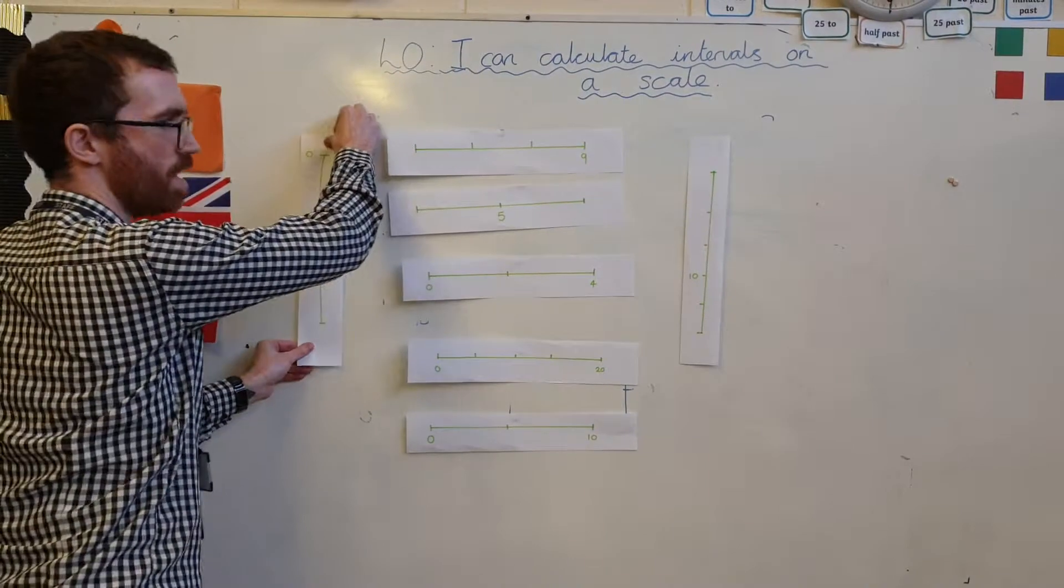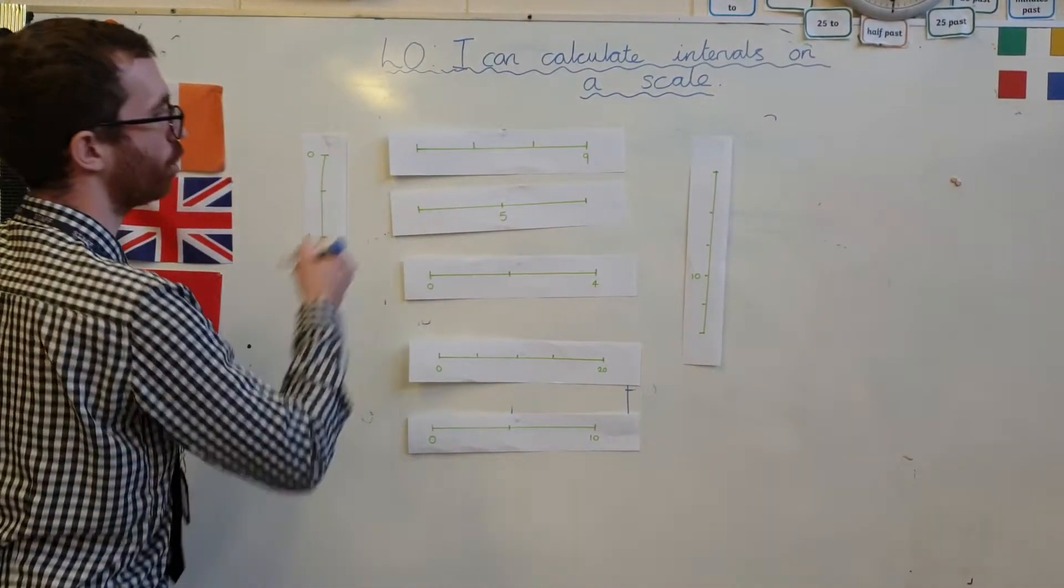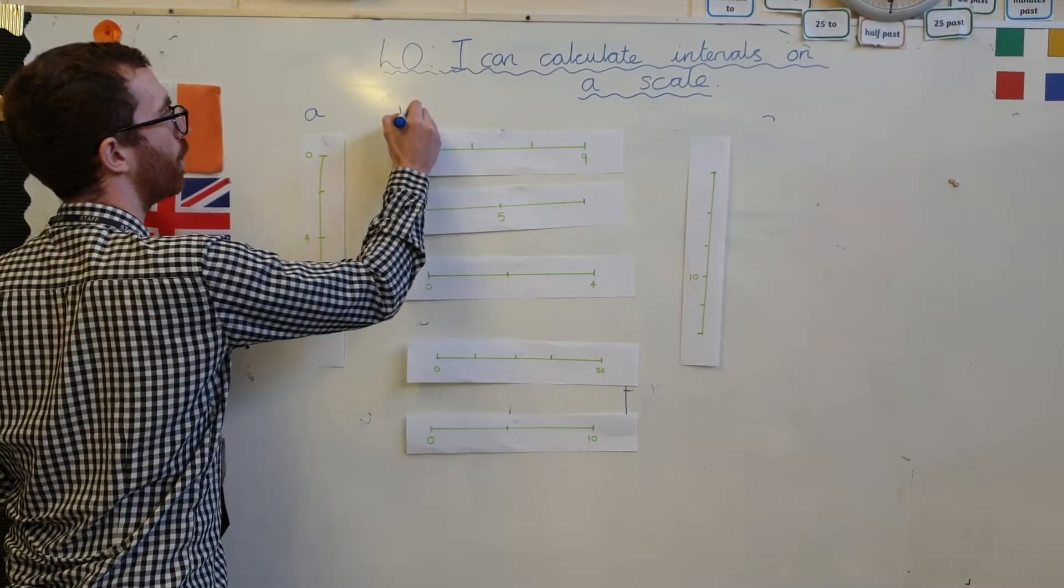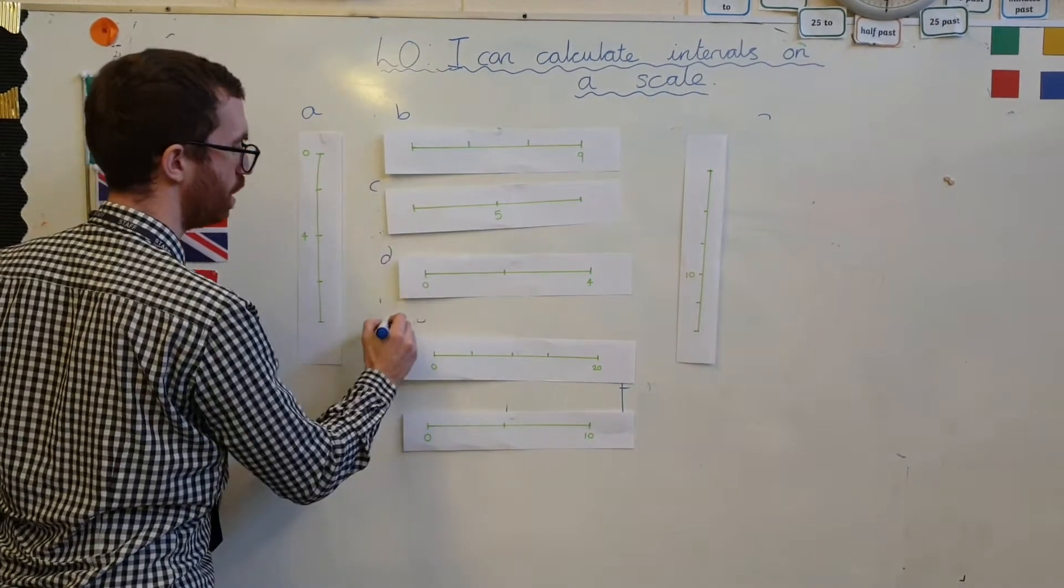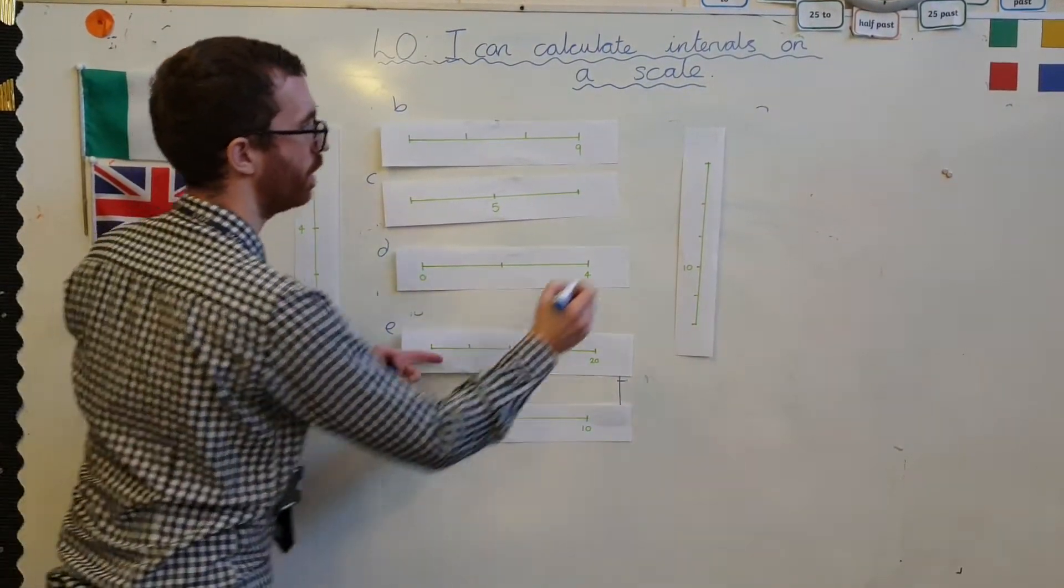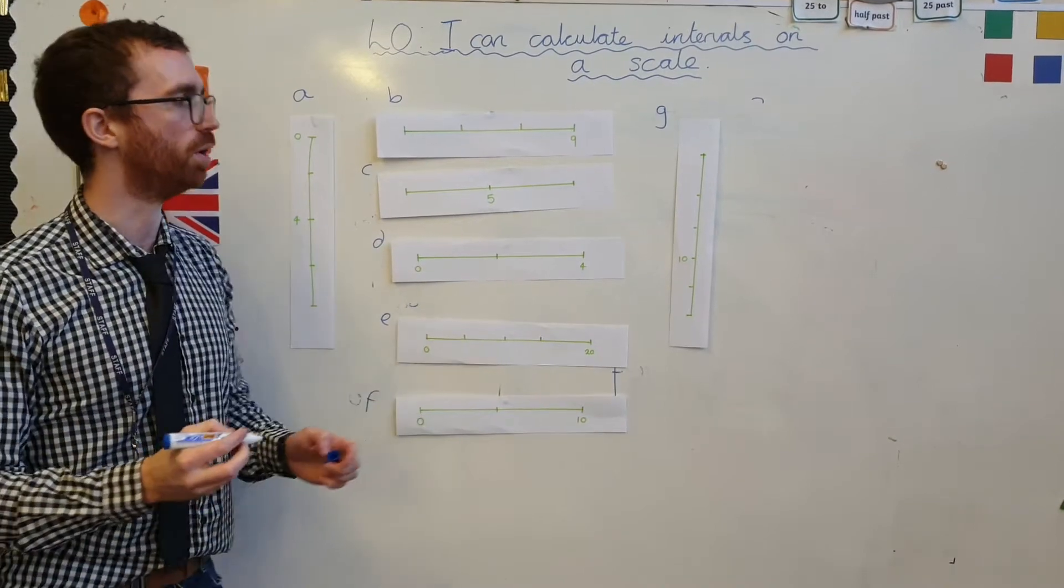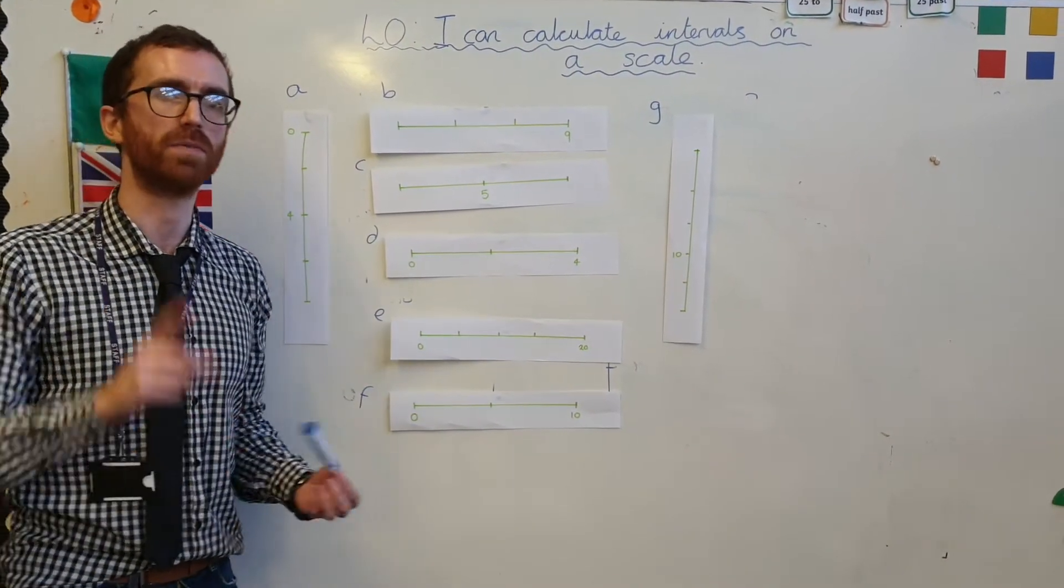So here are all your scales. I'm just going to label them, because we're going to pause this video afterwards. We've got A, B, C, D, E, F, and G. Pause the video, work them out, send them in. Go.